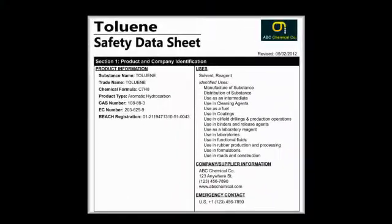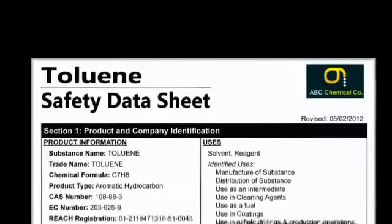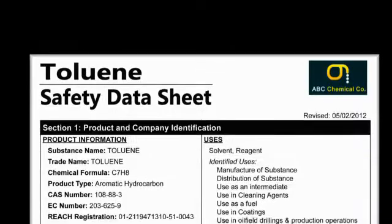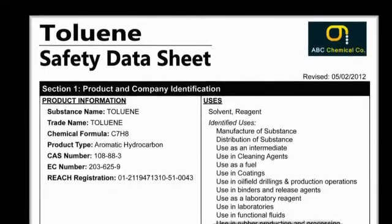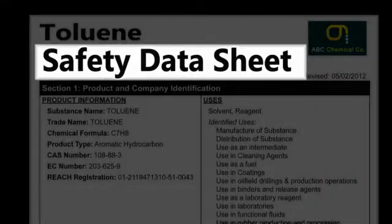Extensive information about a chemical and the hazards it presents is also found in a document called a Safety Data Sheet, or SDS.